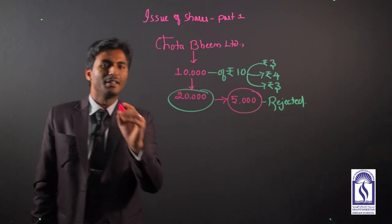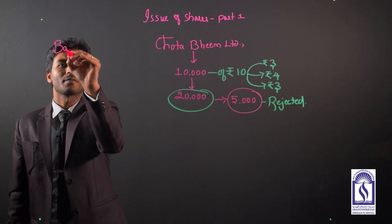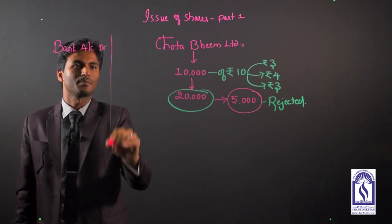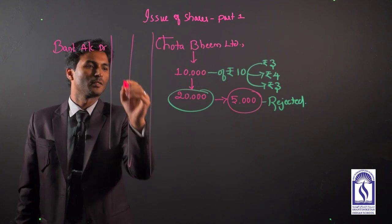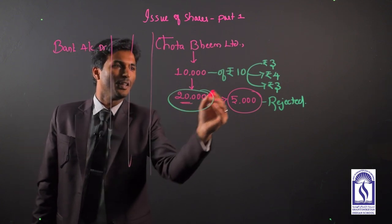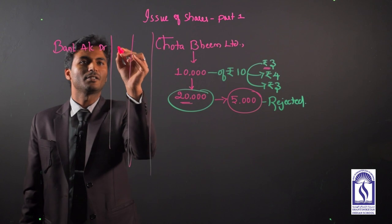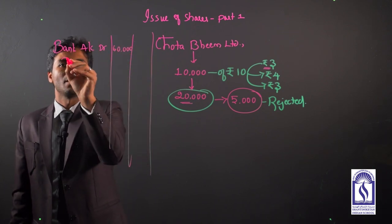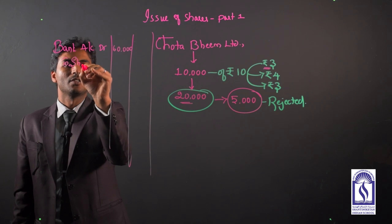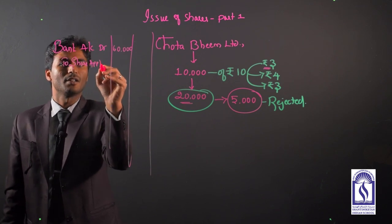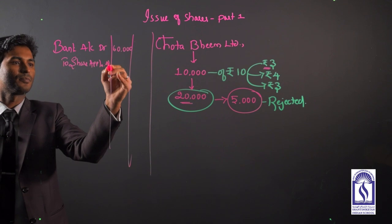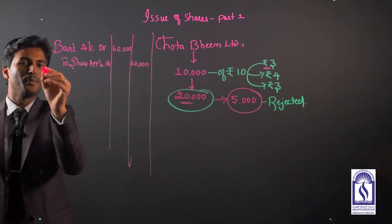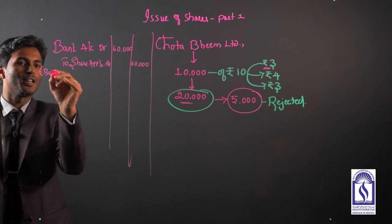The basic entries that should be passed right now is: Bank account debited 20,000 into the application money 3, that is 60,000, and it should be transferred to share application account, being share application money received.